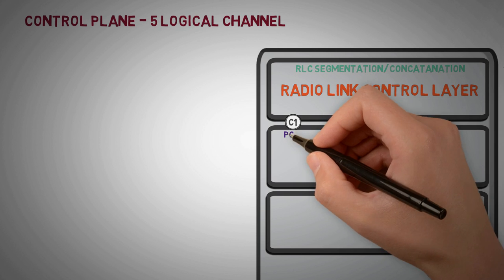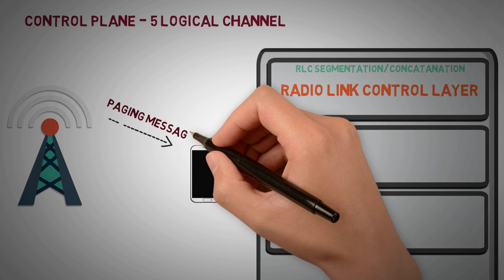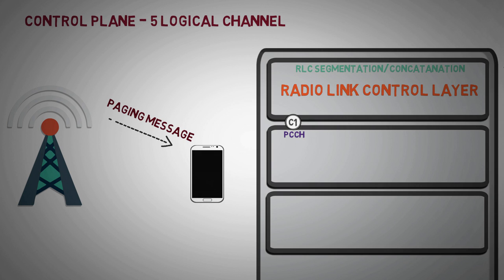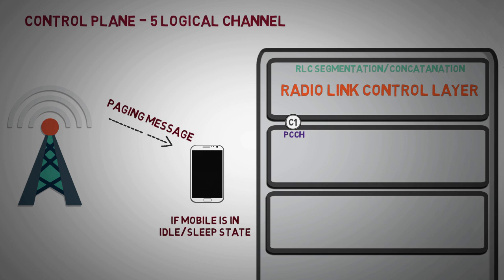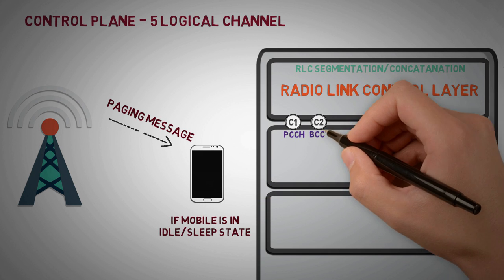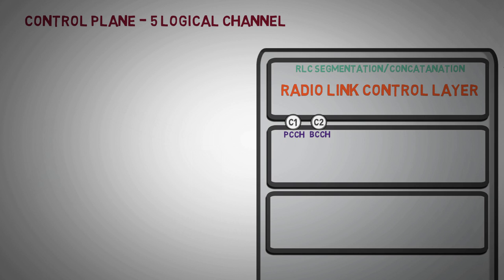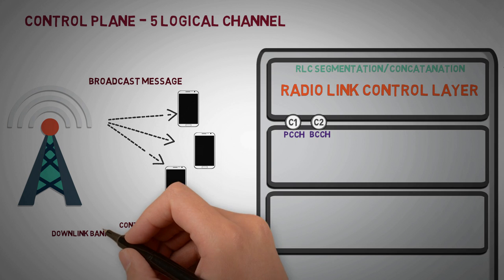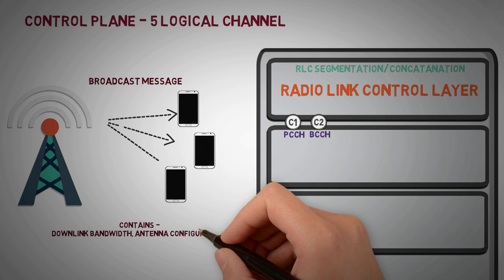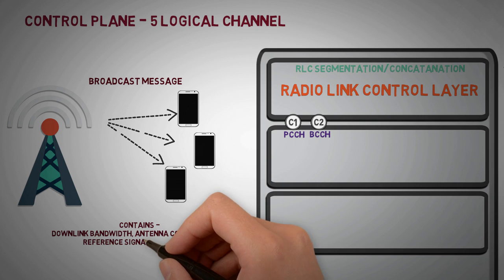Paging control channel, this channel carries paging messages which the E node B transmits if it wishes to contact mobiles that are in idle state. Broadcast control channel is the most vital channel. It is used for broadcasting system control information to the mobile terminals in the cell, including downlink system bandwidth, antenna configuration, reference signal power, etc.